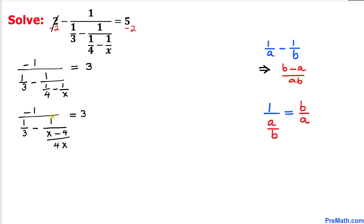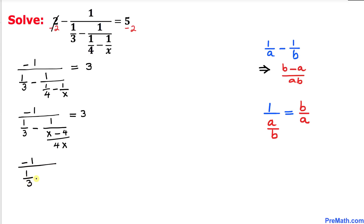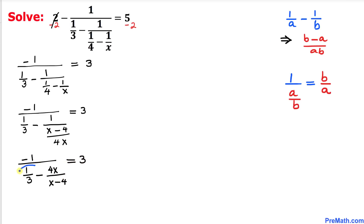Now let's focus on this fraction. We can flip it over, so 1 divided by x minus 4 over 4x becomes 4x divided by x minus 4. Therefore on the left hand side we can write negative 1 divided by 1 over 3 minus 4x divided by x minus 4, equals positive 3.